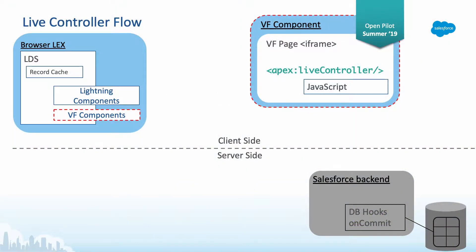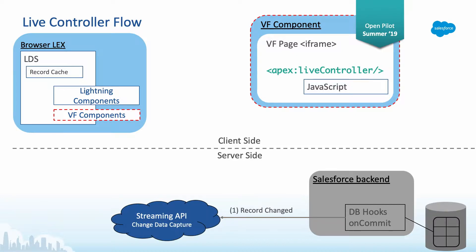Let me talk about how LiveController works, walking through this flowchart. Starting in the lower right corner, we have the Salesforce back-end. Any time data is committed into the Salesforce database, we have the opportunity to run Apex triggers and database hooks. After the trigger runs and the database is updated, we publish that data over the Salesforce Streaming API. LiveController is going to be a hook into the Streaming API within Visualforce pages.